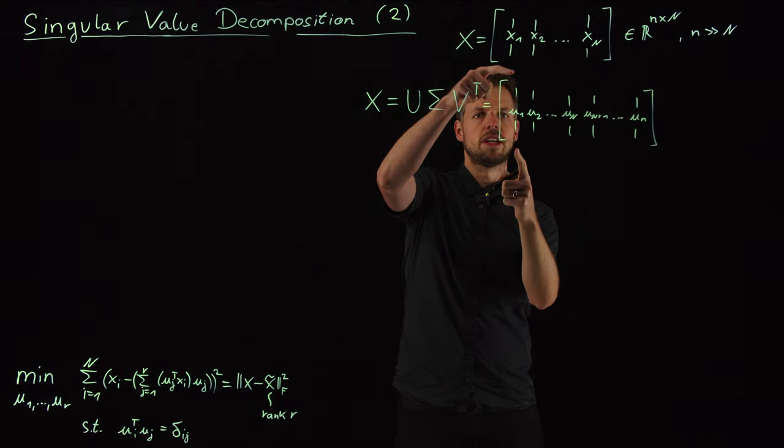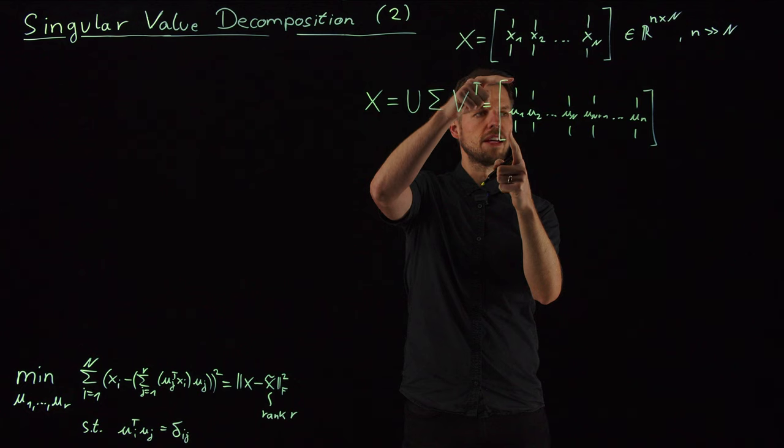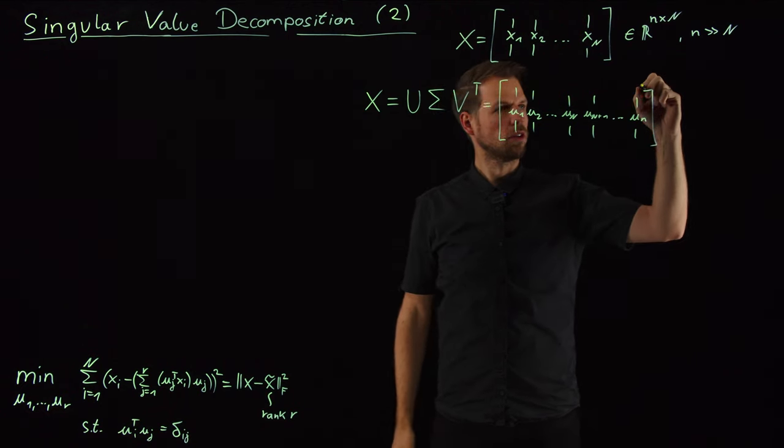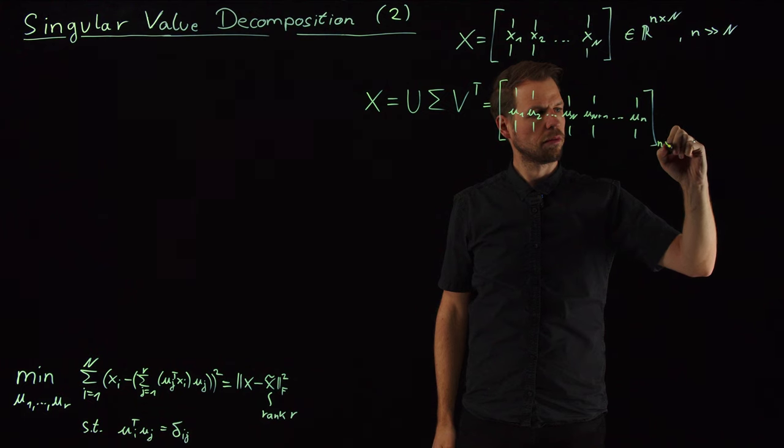And you see, each vector has dimension lowercase n, and we have n lowercase n columns, so it's an n by n matrix. So, this is n times n.